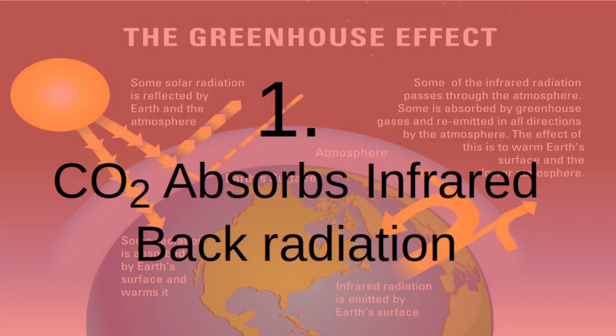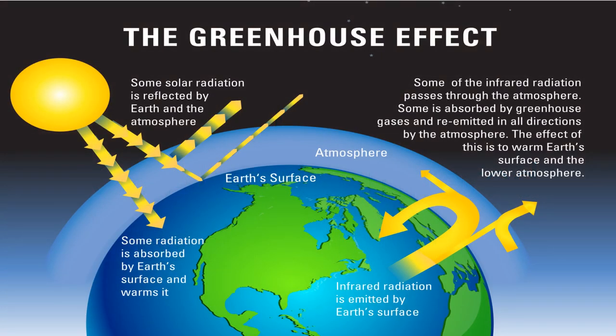CO2 absorbs radiation — infrared radiation. If you look at this picture, you'll see on the left the sun radiates energy, light to our atmosphere. Part of this light is reflected before it enters the atmosphere.